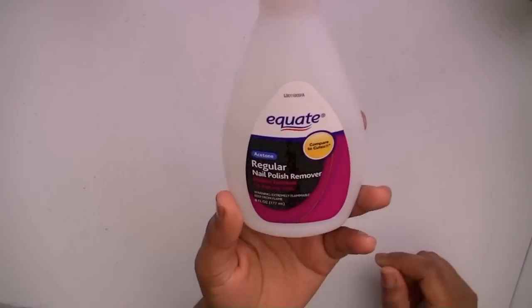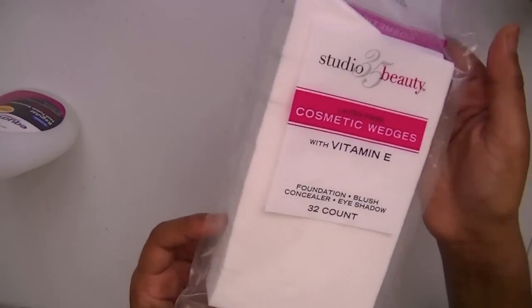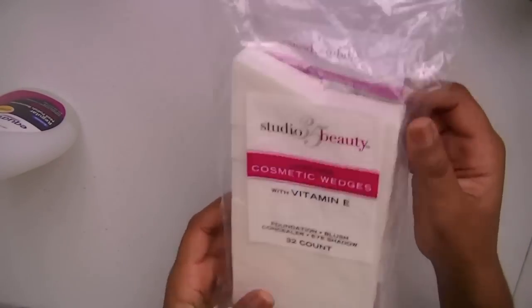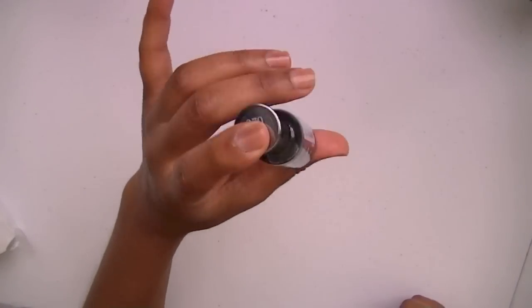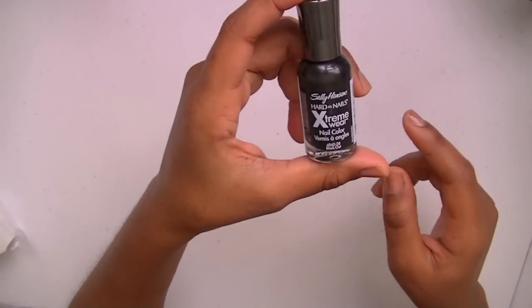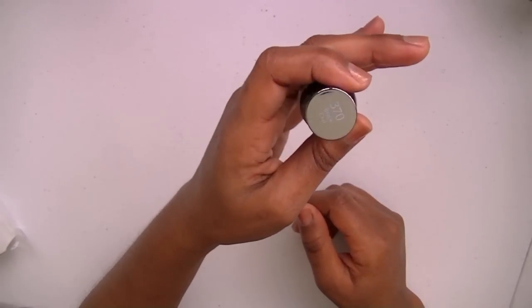The items that I'm using for this tutorial will be any type of fingernail polish remover, some cosmetic wedges or sponges, Q-tips, any type of black nail polish. I have the Sally Hansen formula, hardest nails extreme wear in Blackout.